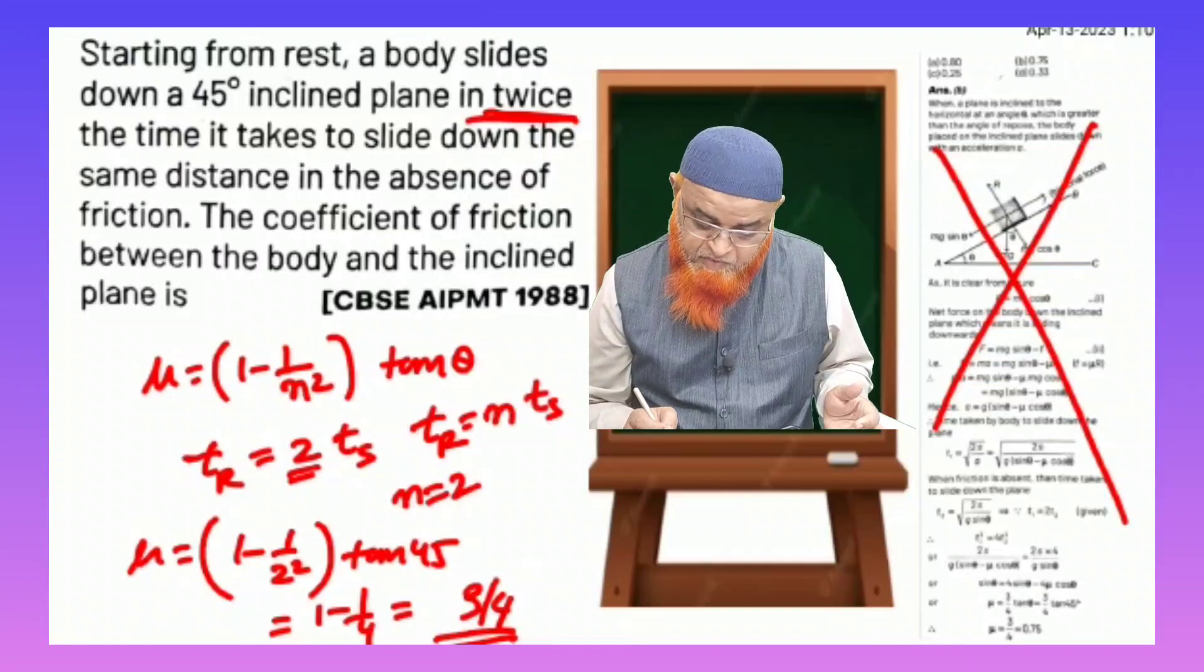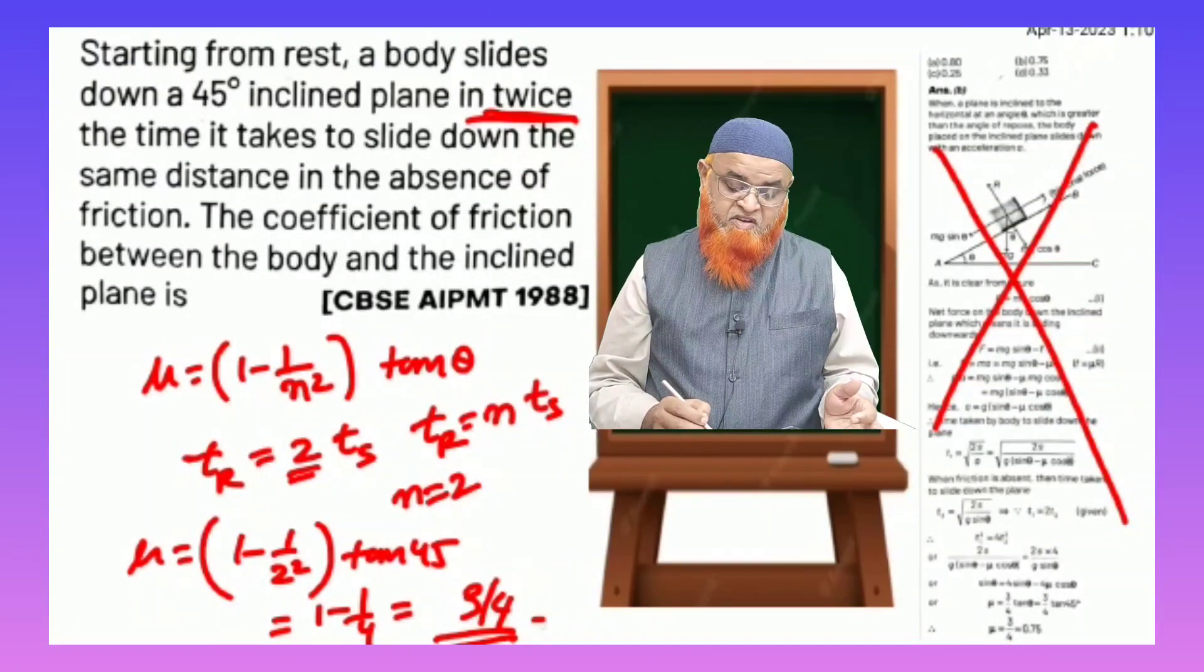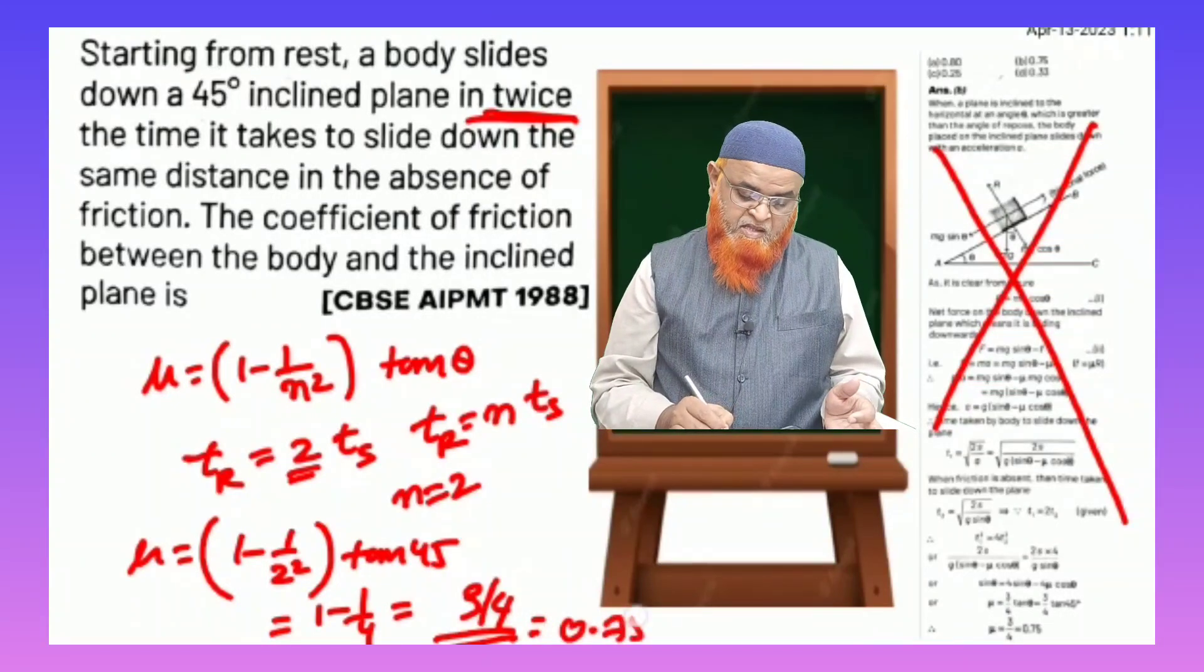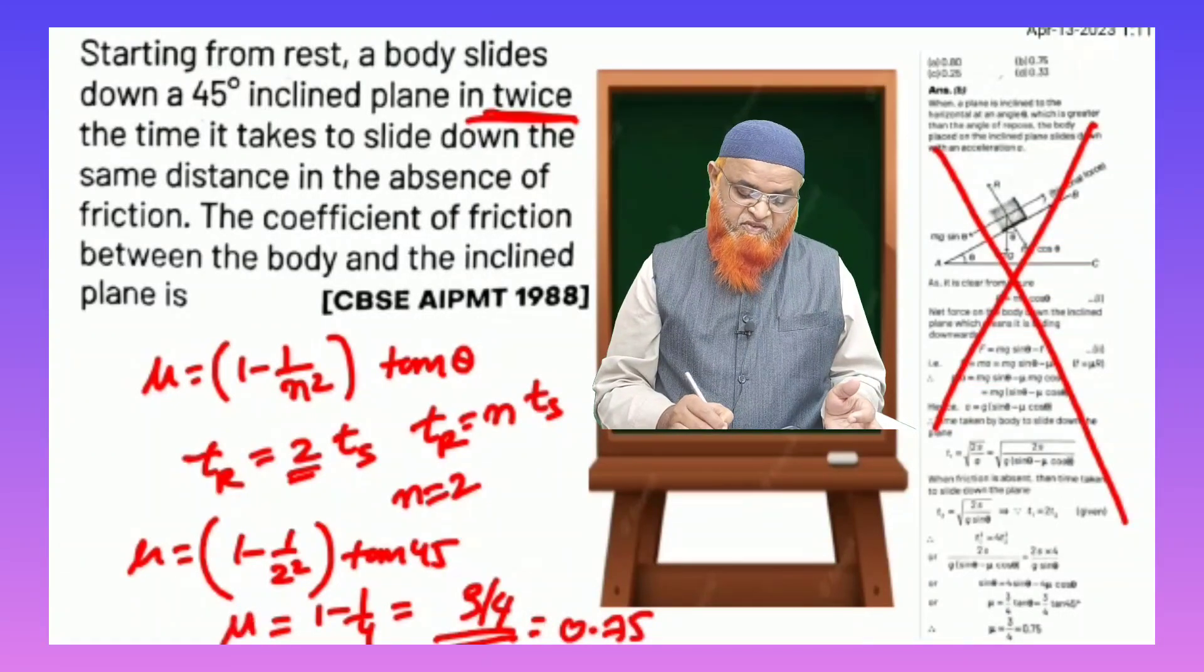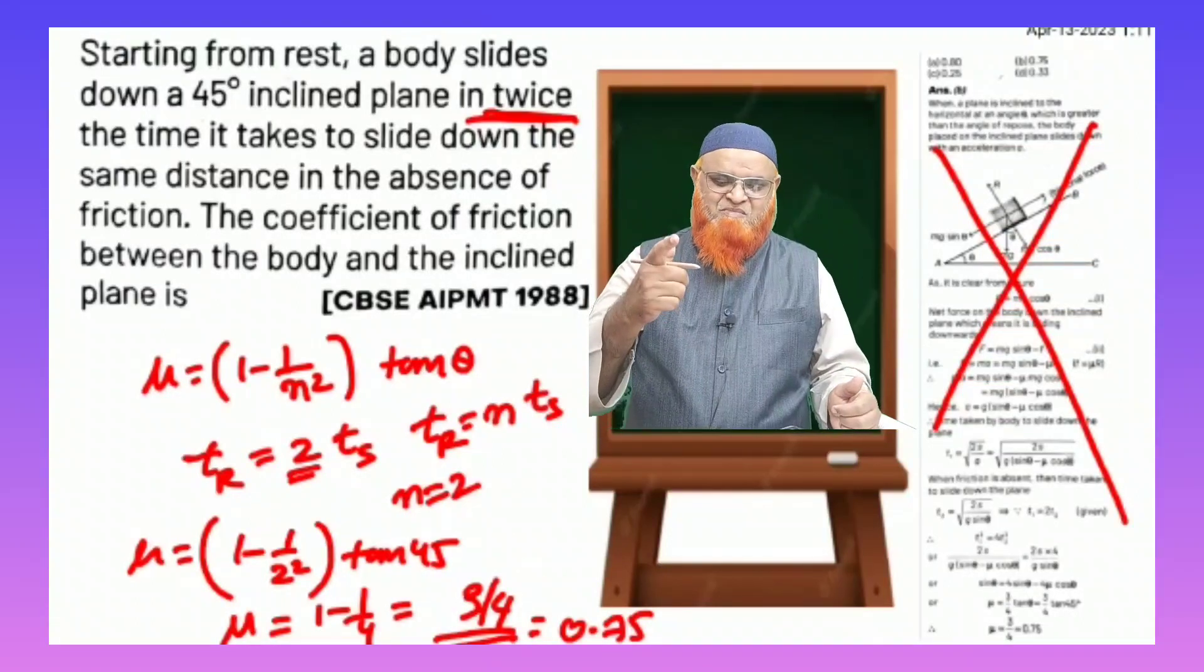Therefore your answer is going to be 3 by 4, which you got by this lengthy method also getting 3 by 4 only. That is 0.75 is going to be your answer. Therefore the answer is 0.75, which is going to be the coefficient of friction. Hope you have enjoyed this method. Thank you very much.